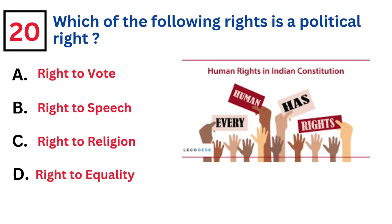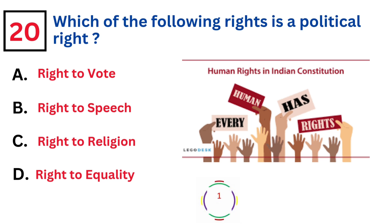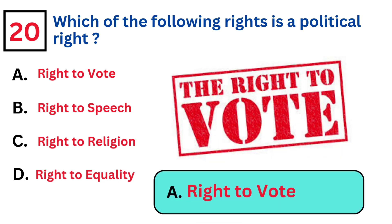Which of the following rights is a political right? Answer A. Right to vote.